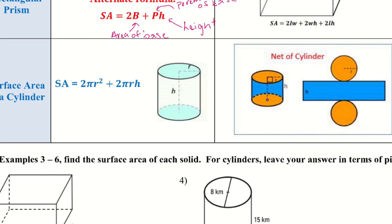The surface area of a cylinder is 2πr² + 2πrh, where r is the radius and h is the height. We can see that in the net of the cylinder: we have two circles, so it makes sense we have the area for two circles — that's the 2πr² part. Then we have a rectangle-type shape, and since we're dealing with a circular figure we continue to have pi, giving us 2πrh.